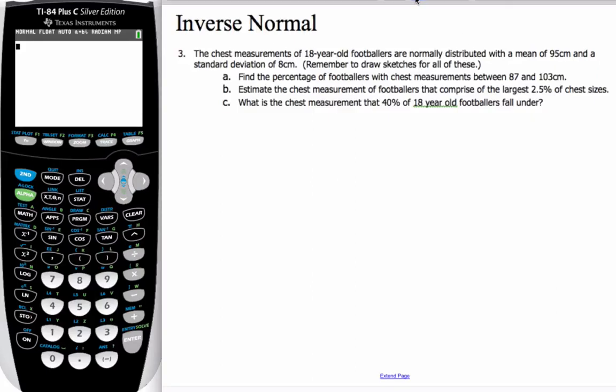Okay, so today we're working on the normal distribution, and sometimes we have to do normal, and sometimes we have to do inverse normal. And so let's consider this problem here. We have chest measurements of 18-year-old footballers are normally distributed with a mean of 95cm and a standard deviation of 8cm.